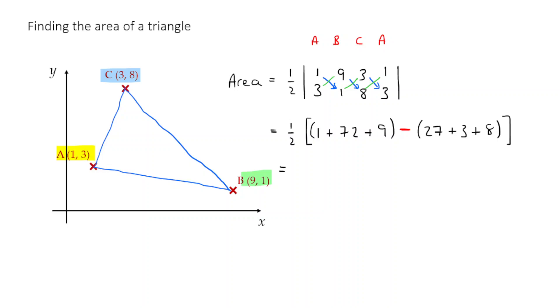Okay, so what's the next step? Well, now I've just got to compute this. So a half of one plus 72 is 73, plus nine is 82. 27 plus three is 30, plus eight is 38. So I'm going to get 82 minus 38. And 82 minus 38 is 44. And if I half that, I get 22.